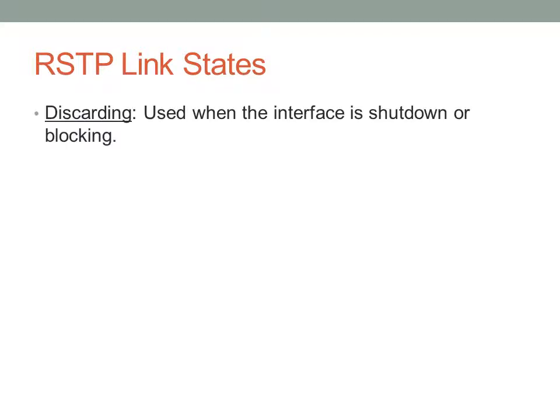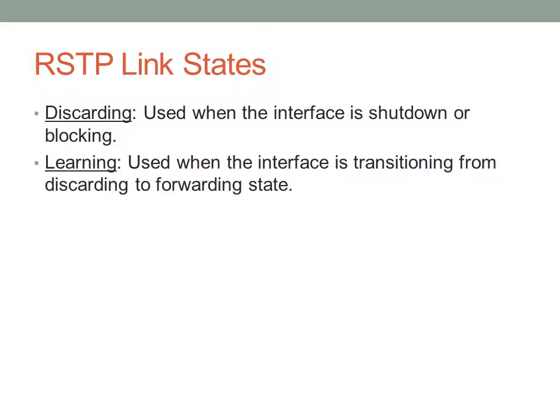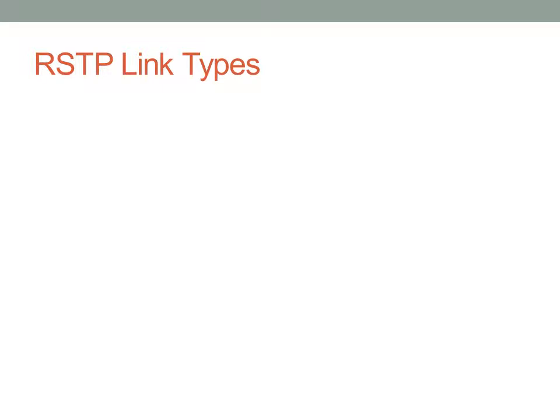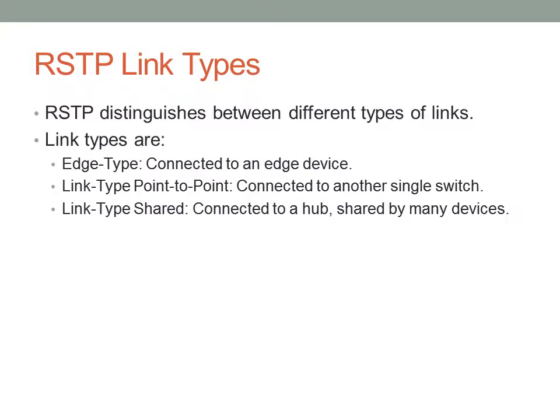Rapid SpanningTree uses different link states: discarding (interface is shut down or blocking), learning (transitioning from discarding to forwarding), and forwarding (actively forwarding traffic). There are also specific link types. Edge type is basically a link configured with PortFast — not connected to another bridge — and these edge type connections don't have to participate in SpanningTree.